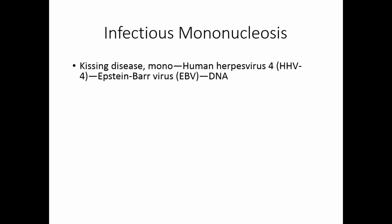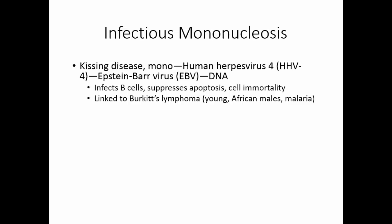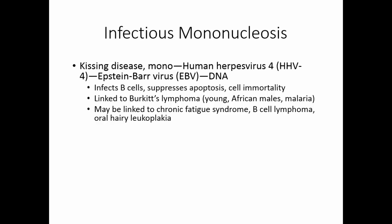Infectious mononucleosis, sometimes called the kissing disease or mono, is caused by human herpesvirus 4, better known as Epstein-Barr virus — a DNA-containing virus. This virus infects B cells, suppresses apoptosis of the cell, and gives the cell a type of immortality. Epstein-Barr virus has been linked to Burkitt's lymphoma, seen in young African males exposed to malaria, where lymph nodes in the cervical region expand and become cancerous. It may also be linked to chronic fatigue syndrome, B-cell lymphoma, and possibly oral hairy leukoplakia.